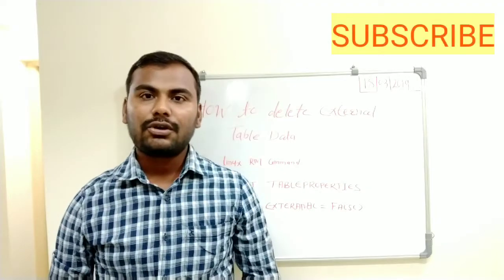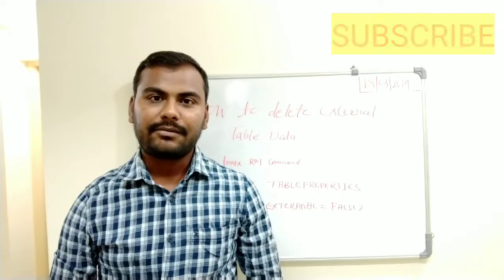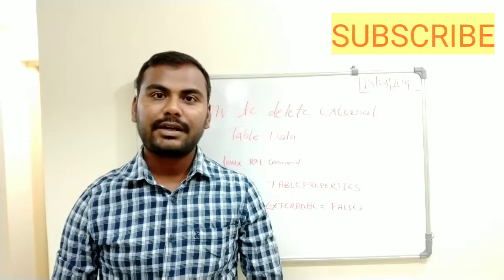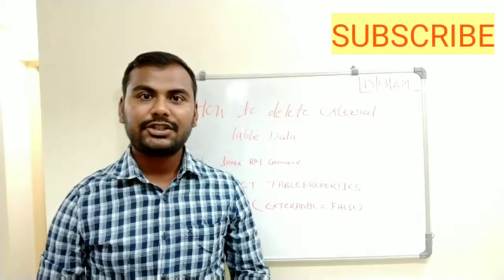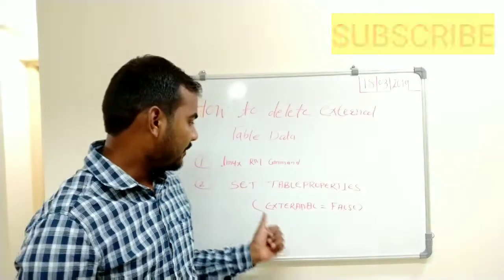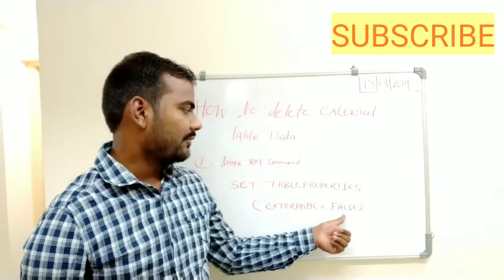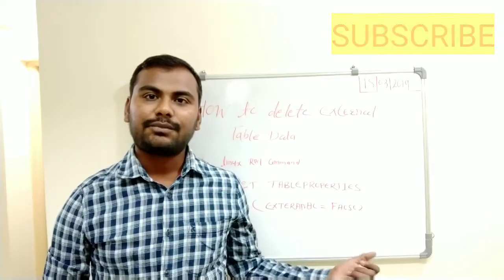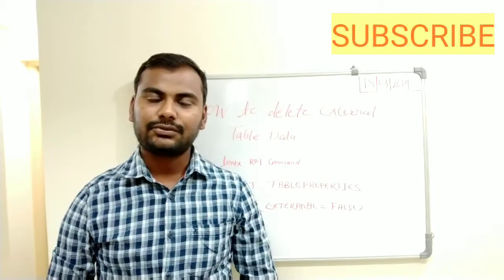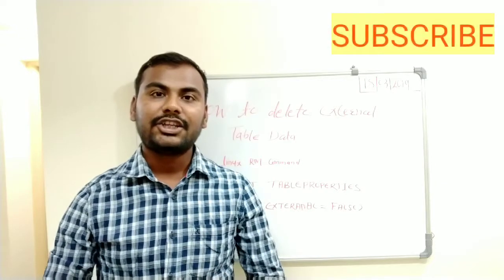Now, in order to delete the data from the external table, you need to convert that external table to an internal table. How to do that? You just need to change the table properties: external equals to false. By setting up this property, it will convert your external table to internal table, and then you can delete the data.